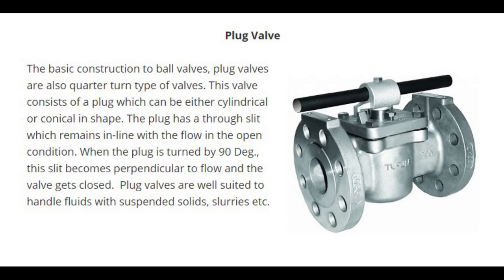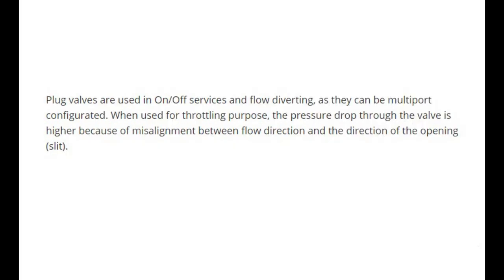Plug valves are similar in basic construction to ball valves and are also a quarter-turn type. This valve consists of a plug which can be either cylindrical or conical in shape. The plug has a through-slit which remains in line with the flow in the open condition. When the plug is turned 90 degrees, the slit becomes perpendicular to flow and the valve closes. Plug valves are well suited to handle fluids with suspended solids and slurries, and are used in on/off service and flow diverting. When used for throttling, the pressure drop is higher due to misalignment between flow direction and the direction of the opening slit.